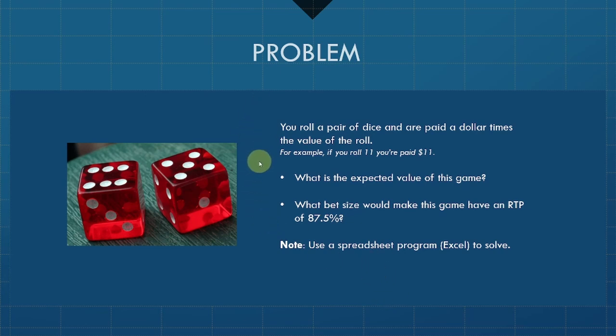I came up with a game for you to analyze, a pretty simple dice game. The rules are: you're going to roll a pair of dice, and whatever the value is that you roll, that's how much you're going to be paid. For example, if I roll a 5 and a 6, that's an 11, I get paid $11. I want you to figure out the expected value of this game, and what bet size to ensure an RTP of 87.5%. I would suggest using a spreadsheet program to solve this.